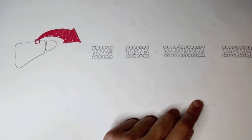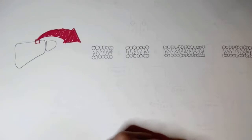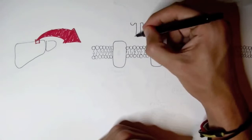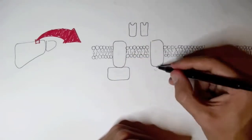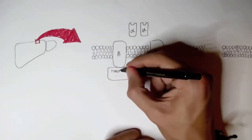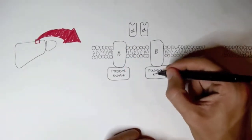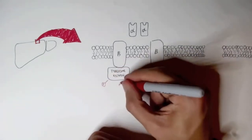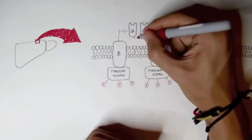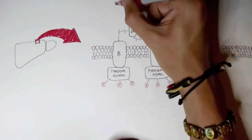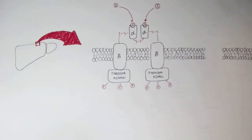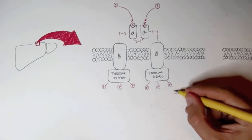The tyrosine kinase receptor for insulin — the insulin receptor — consists of four subunits and two inner enzymes: two alpha subunits, two beta subunits, and two intracellular tyrosine kinase enzymes bounded to the beta subunits on the inner membrane. The tyrosine kinase is autophosphorylated, containing many phosphate groups. The alpha-beta subunits as well as the alpha-alpha subunits are connected by disulfide bonds.